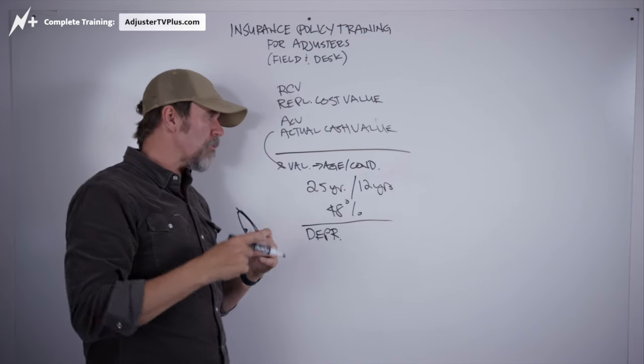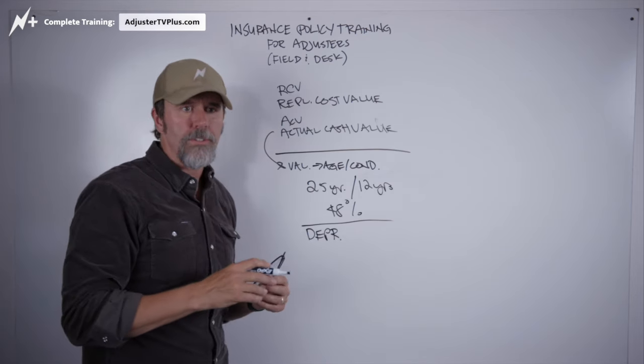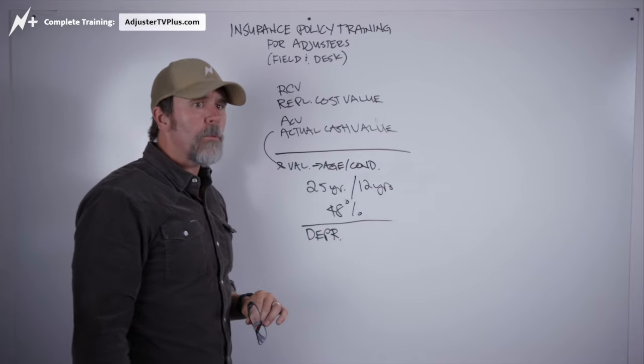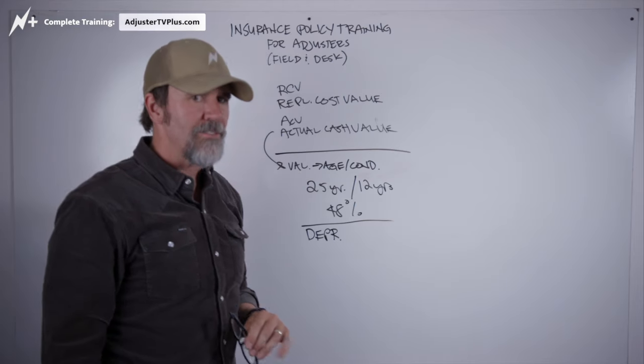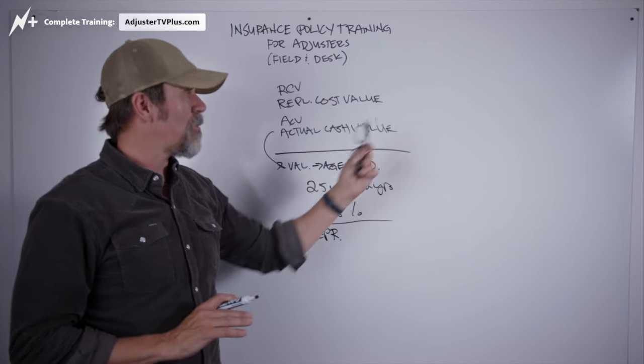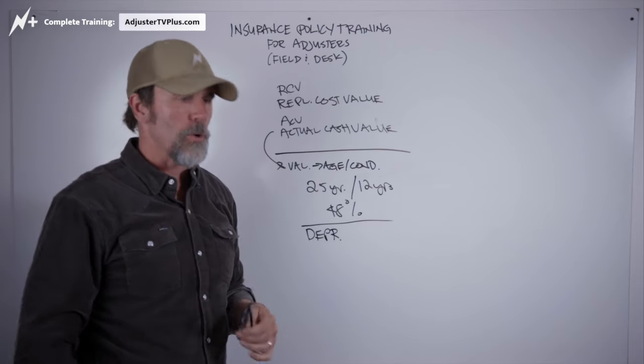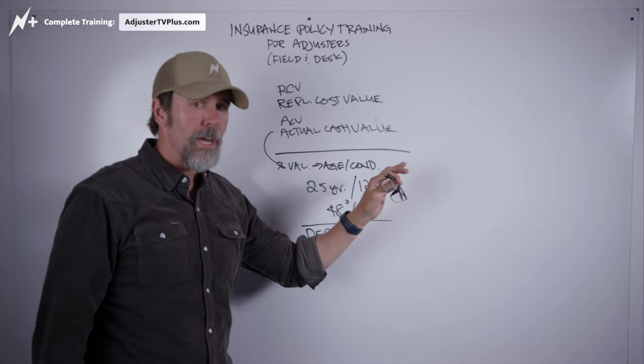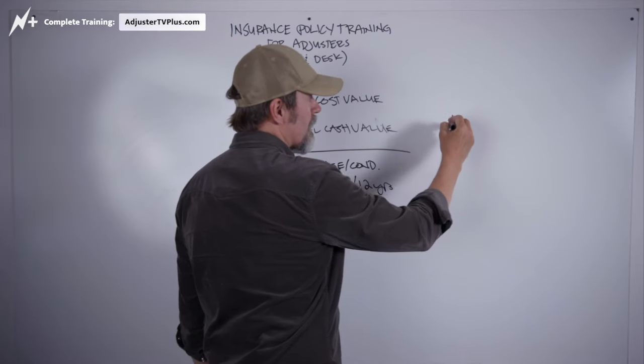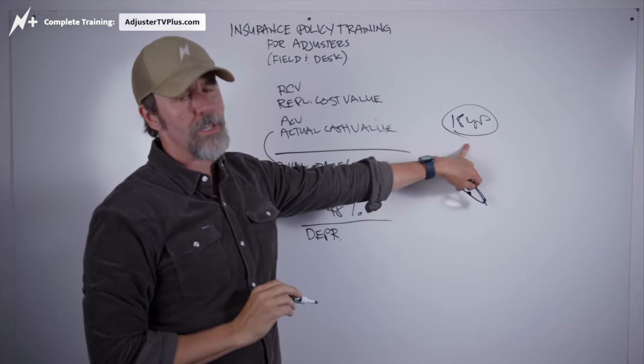Sometimes the carrier will have a separate rule and say, for example, American families, I don't know if they do it now, but they used to do this where they would say, okay, we know it's a 25 year shingle, but if you're in the state of Texas, that is no way in God's green earth that any composition shingle is going to last 25 years. So we're going to say that the average useful or the useful lifespan of a 25 year shingle is going to be adjusted to 18 years. And then you got to use that number when you calculate your depreciation.